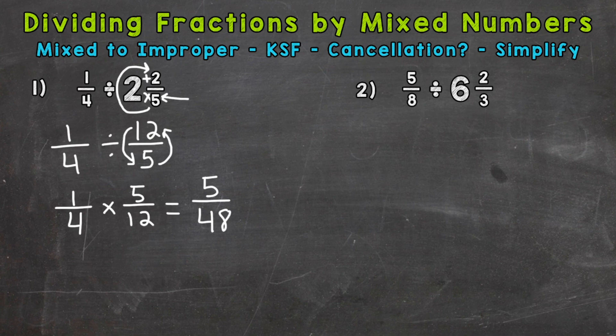Five over forty-eight is our final answer, but always look to see if you can simplify. In the case of number one, the greatest common factor between five and forty-eight is one, so we are in simplest form.